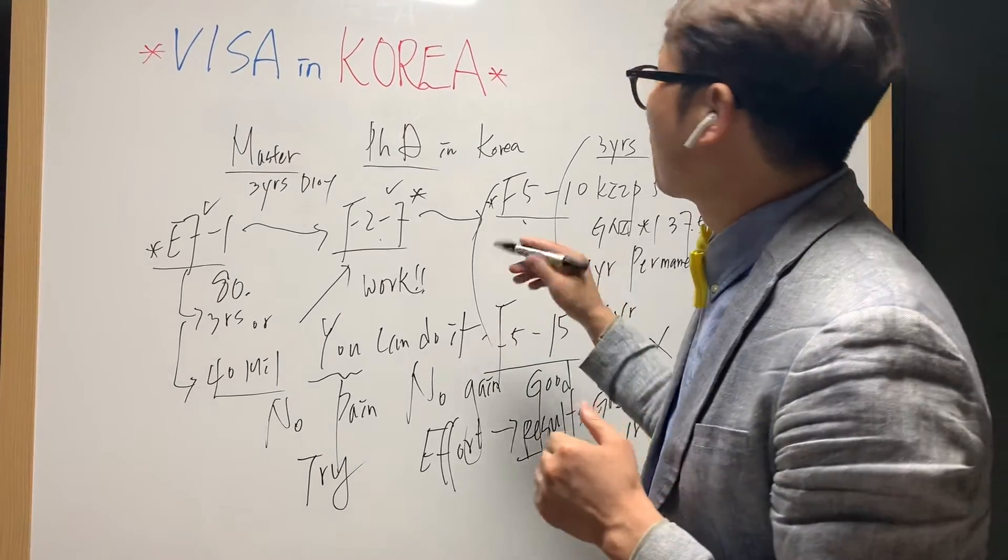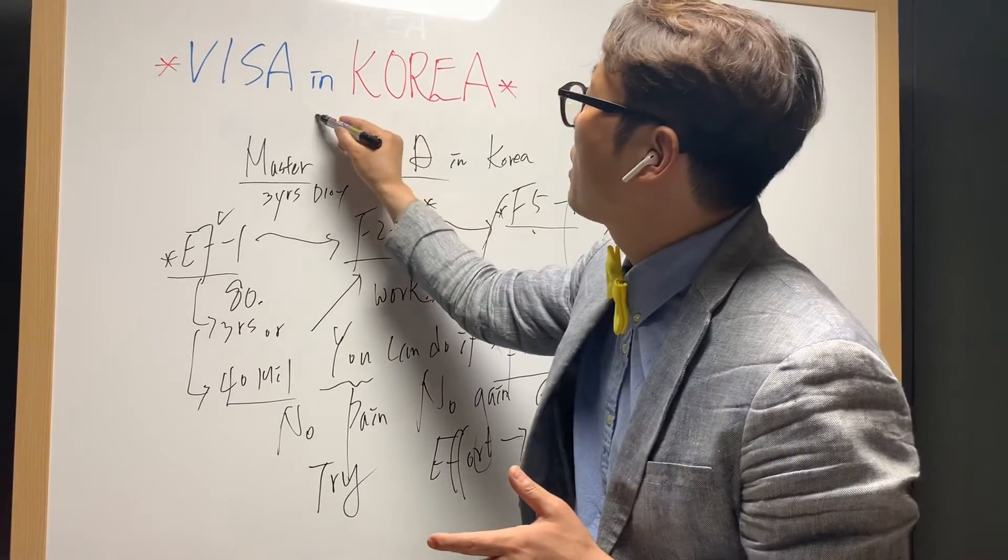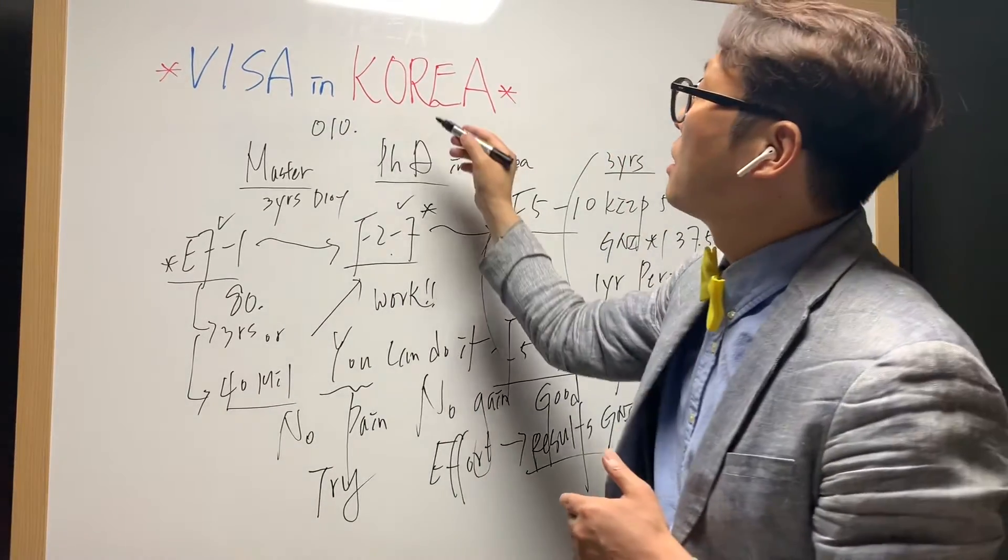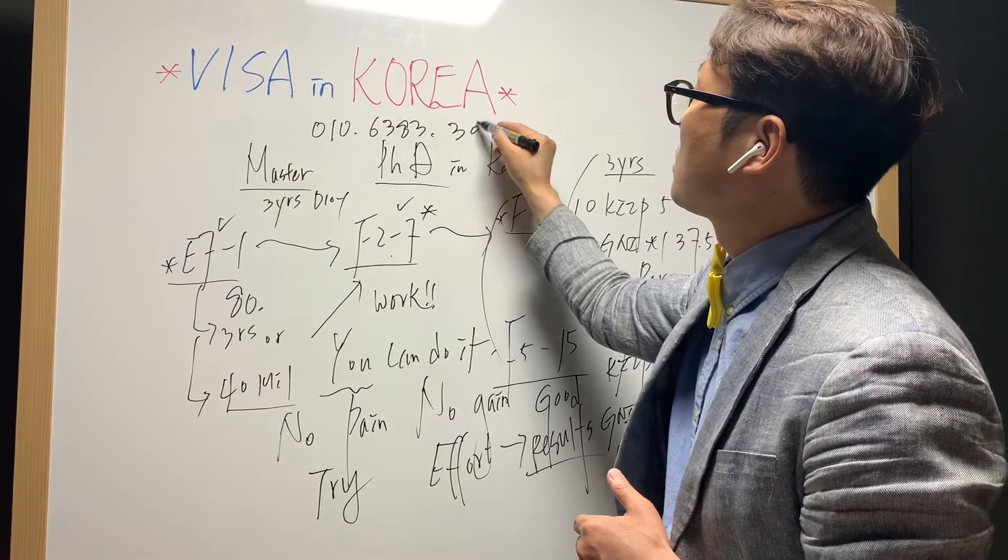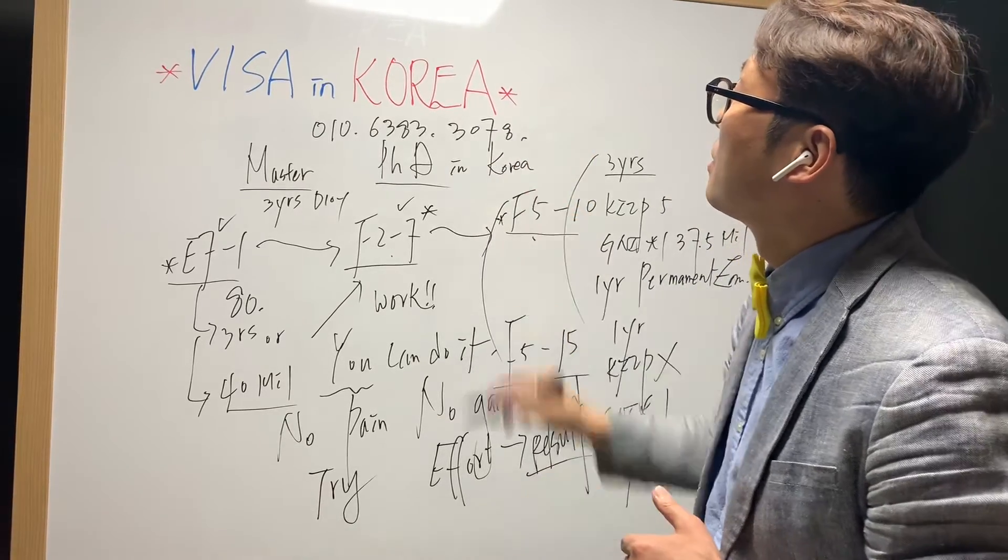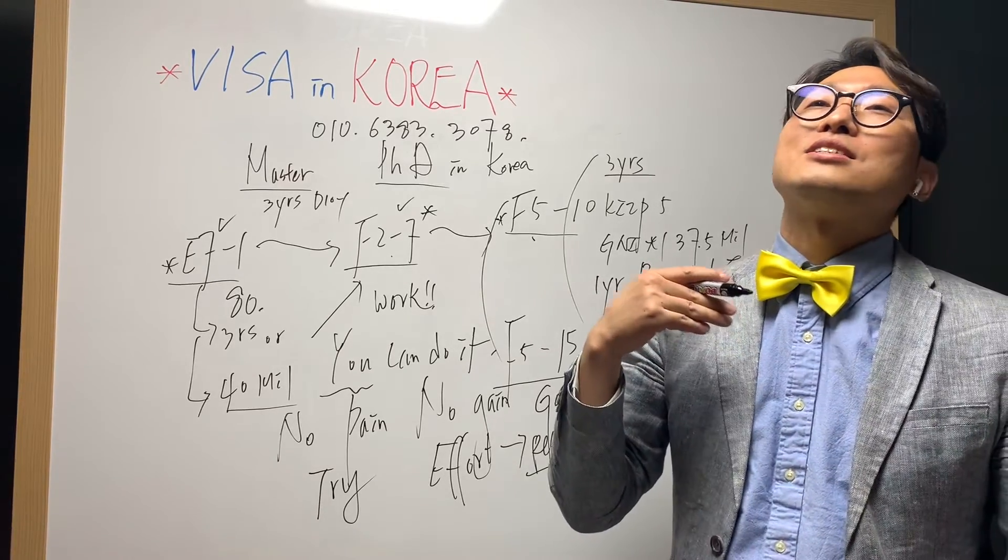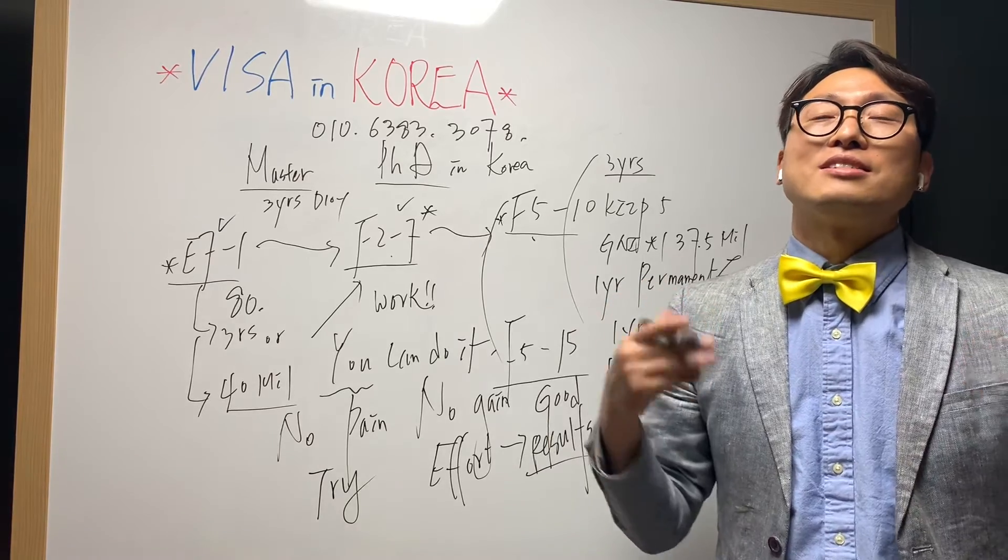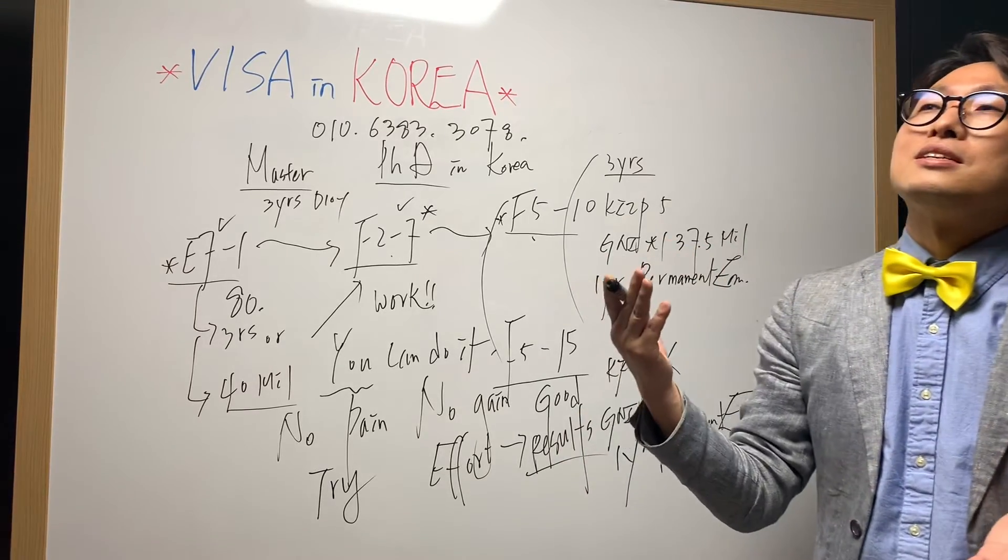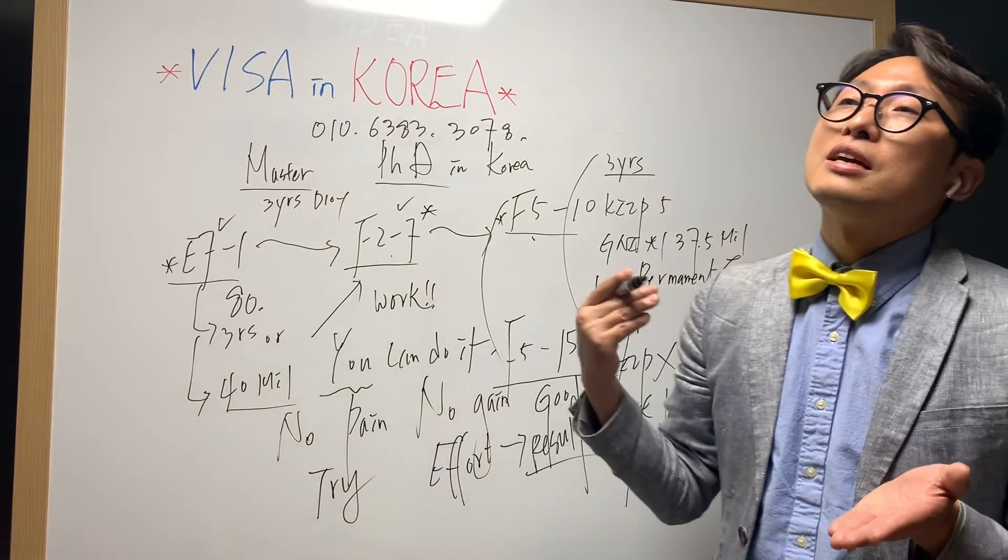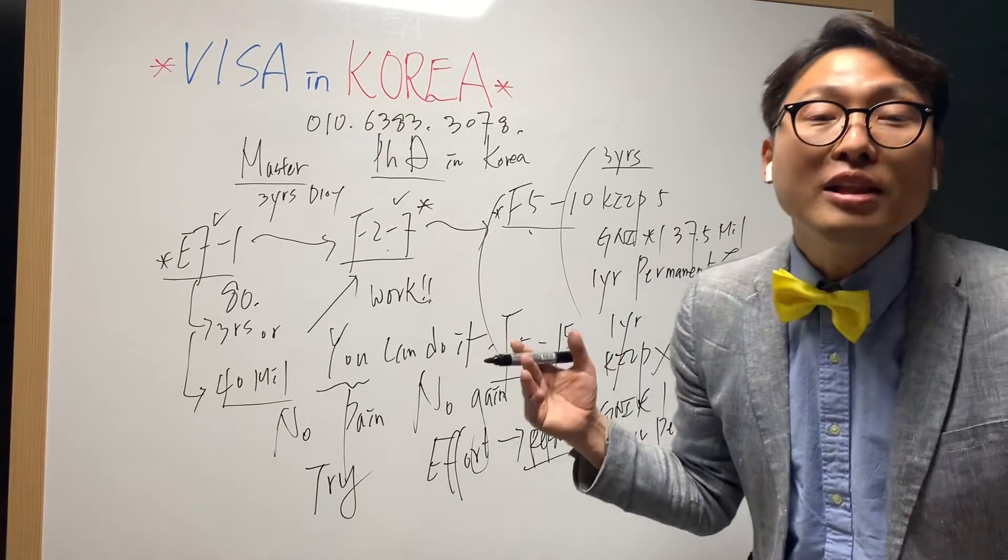If you have any questions for the F5-10, F5-15, and also F2-7, you may contact Mr. Jang's cell phone number 010-6383-3078. You can contact me and please call and introduce your name. Politeness is a very, very powerful weapon. We need etiquette.